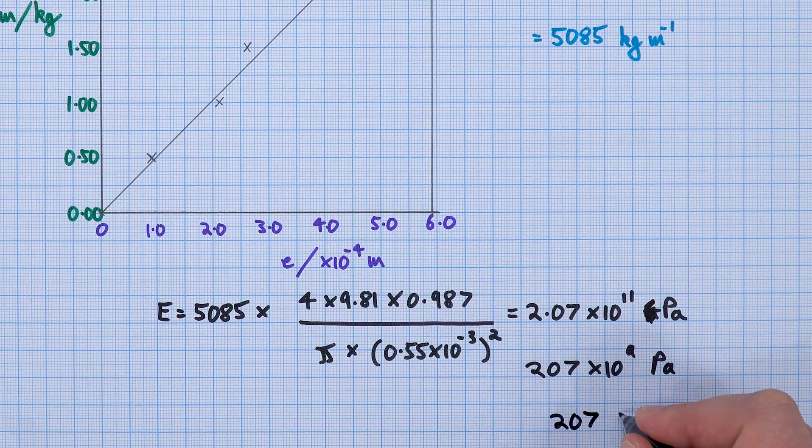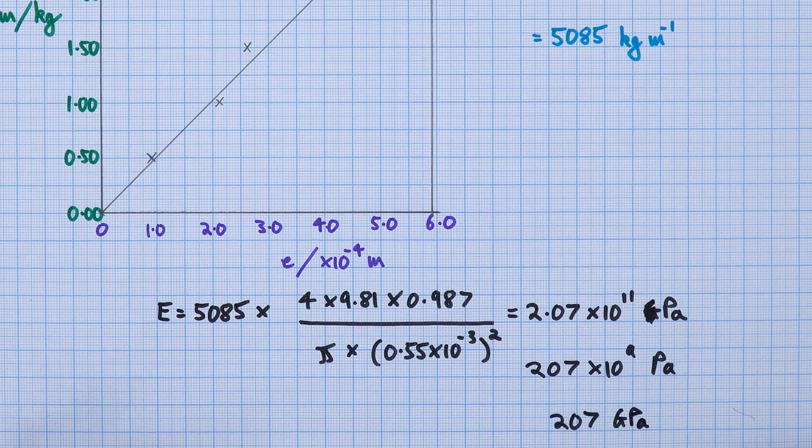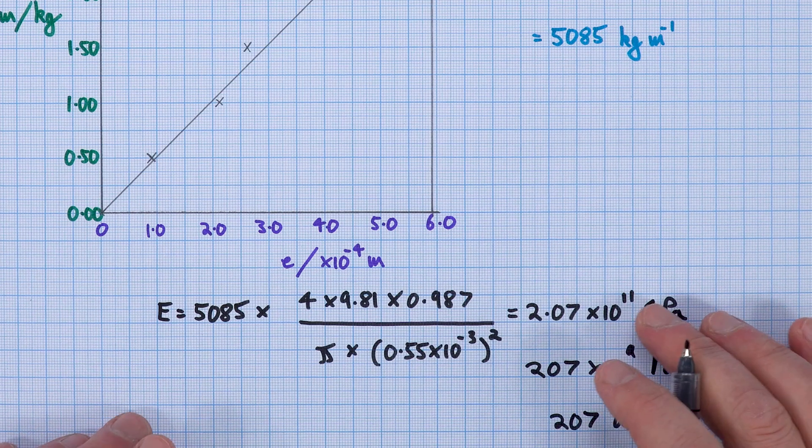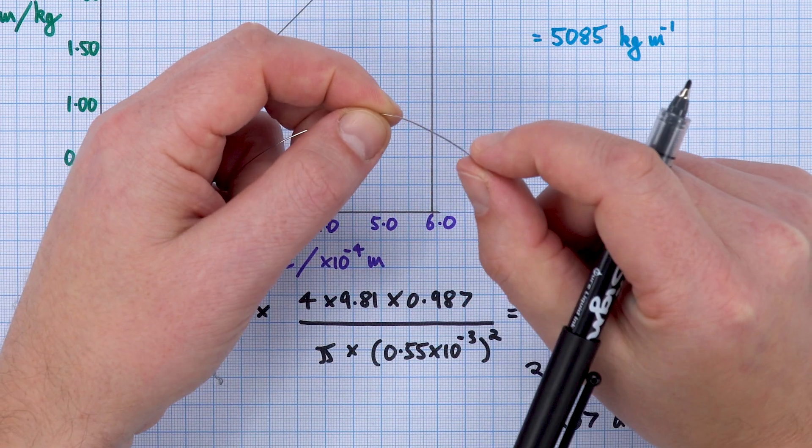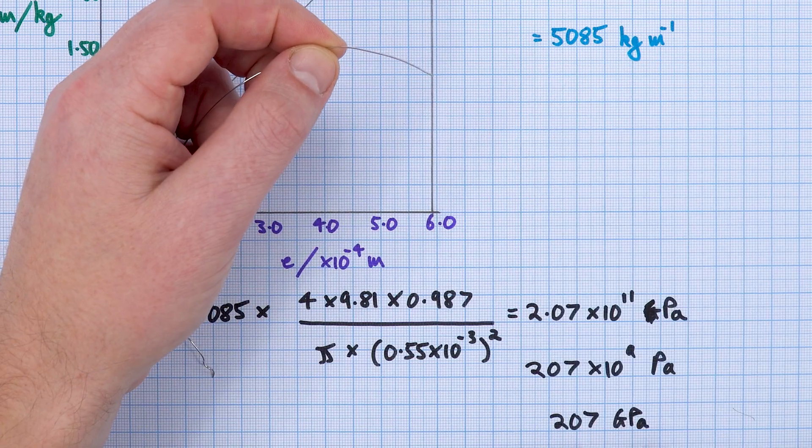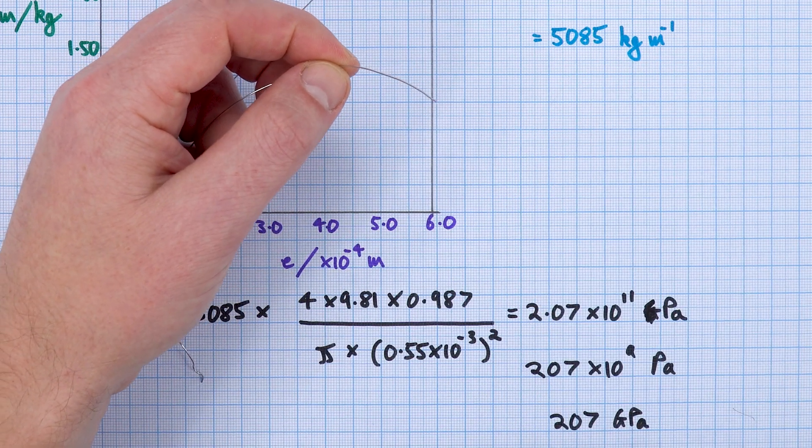Which is about 207 gigapascals. This is very close to some of the published values. Of course, when they publish data for steel, there are loads of different sorts of steel which all have their individual different values of the Young modulus, but that's what we're expecting—between 200 and 210.